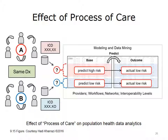This diagram shows the effect of process of care and different coding habits on population health analytics. On the left side of the diagram, two different practices are shown. Practice A may choose a slightly different code for the same diagnosis than practice B, simply because they are used to doing so. This coding discrepancy will affect the accuracy of the predictive model in forecasting the outcome. Hypothetically, if all patients had had the same diagnosis and outcomes, the group of patients coded by practice A will create a bias in the data, as their diagnoses are encoded as higher risk.